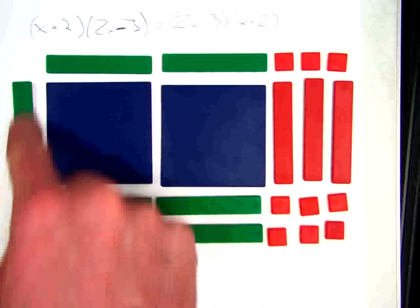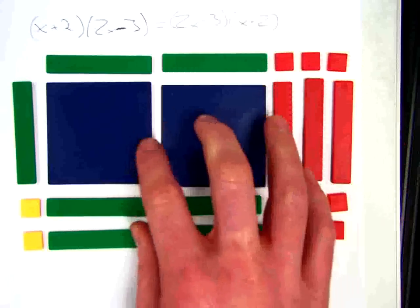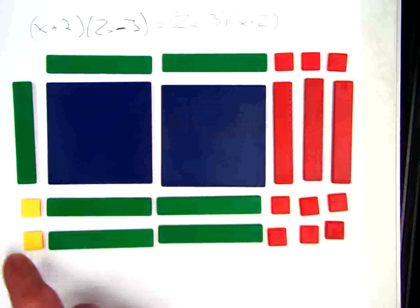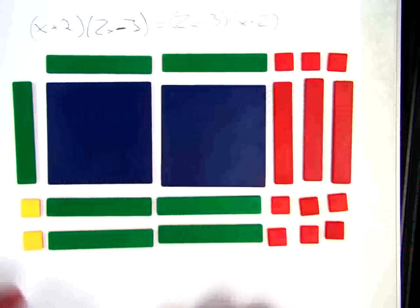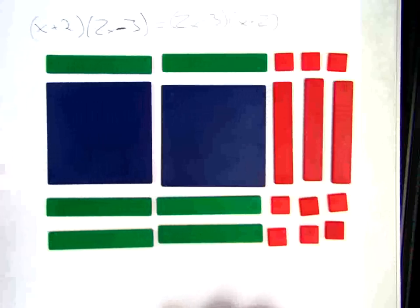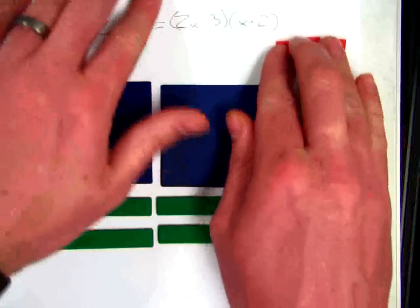And so now what I have is my factors on the outside and my product in the middle. x plus 2 times 2x minus 3. Now if I take the factors away, I want to do that just so I can focus on what my product is.